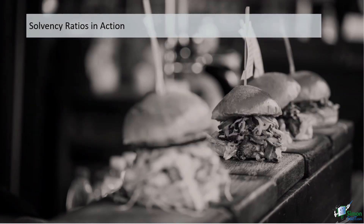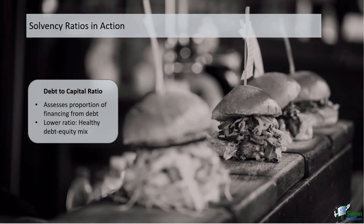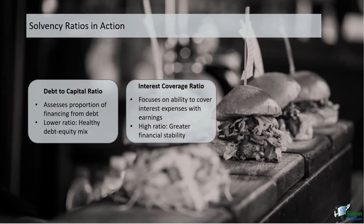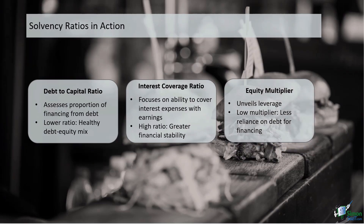Now let's look at some solvency ratios. The debt-to-capital ratio assesses the proportion of Sandmart's financing that comes from debt — a lower ratio signifies a healthier balance between debt and equity. The interest coverage ratio delves into Sandmart's ability to cover its interest expenses with earnings; a higher ratio indicates greater financial stability. The equity multiplier scrutinizes the relationship between assets and equity, where a lower multiplier implies less reliance on debt. Through solvency ratios, we gauge Sandmart's long-term financial viability.